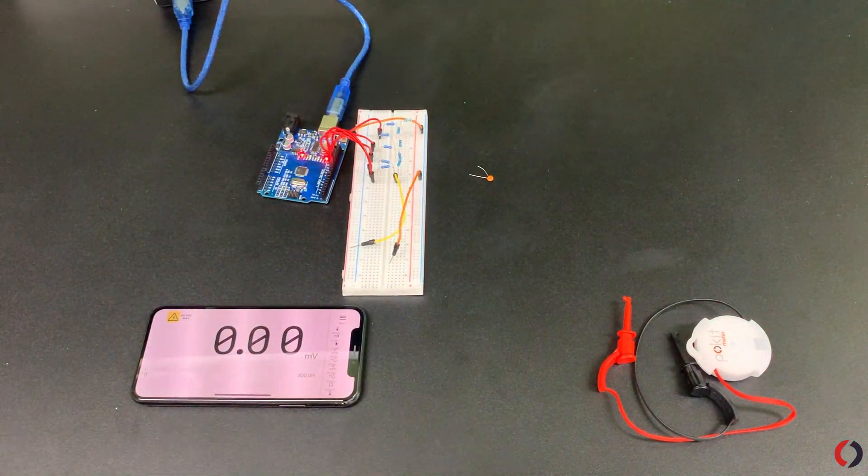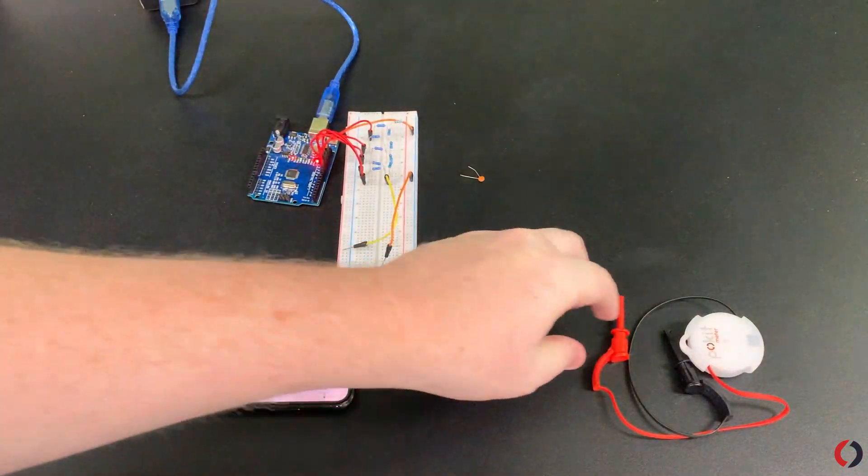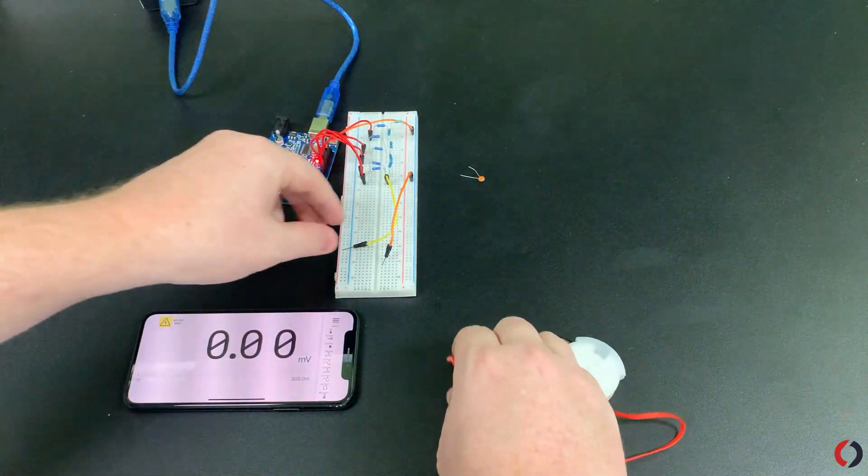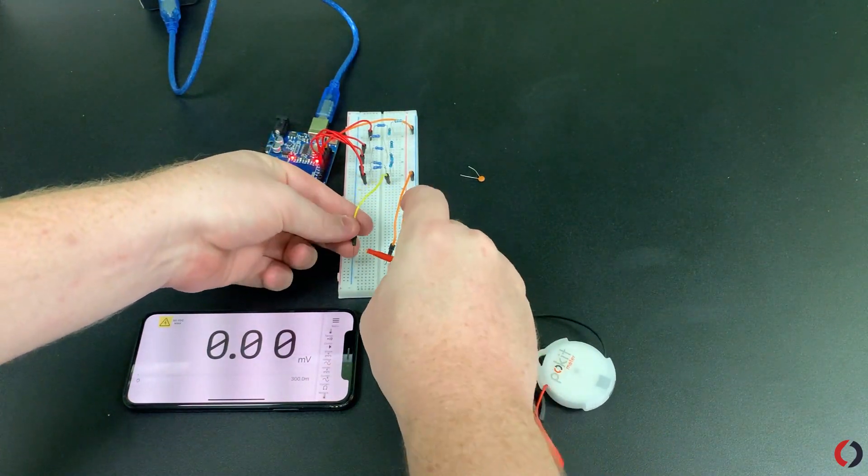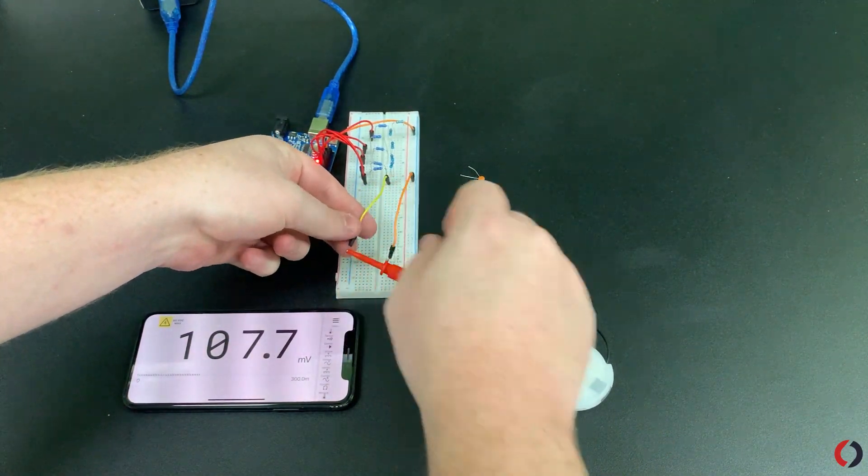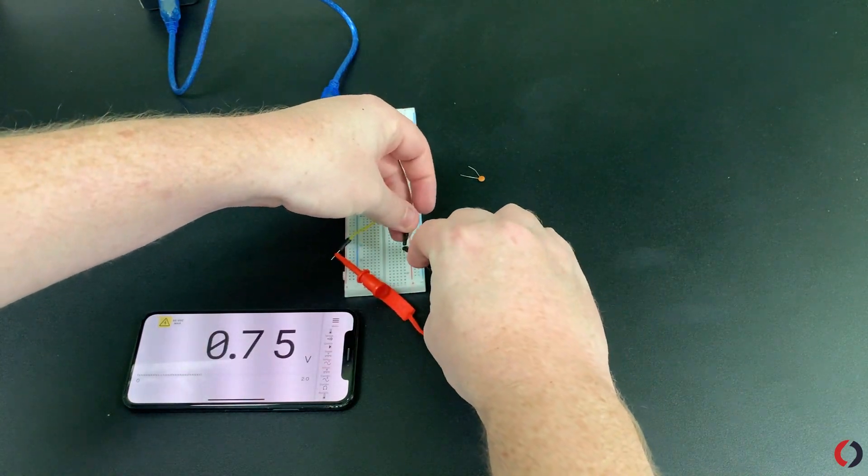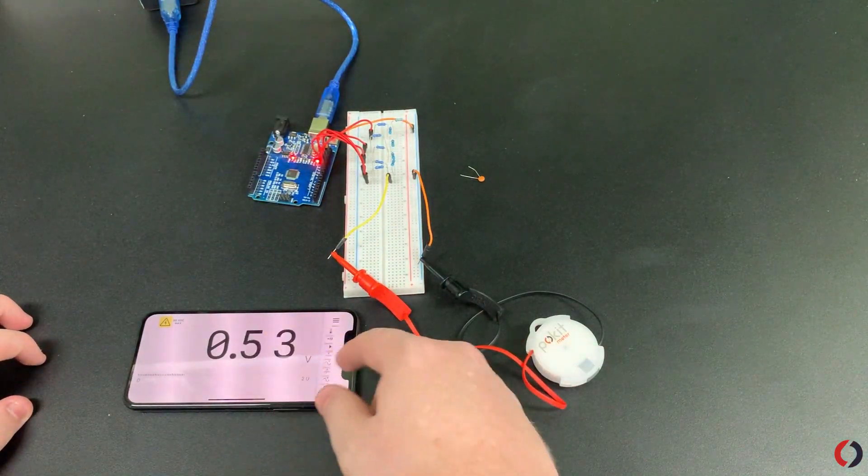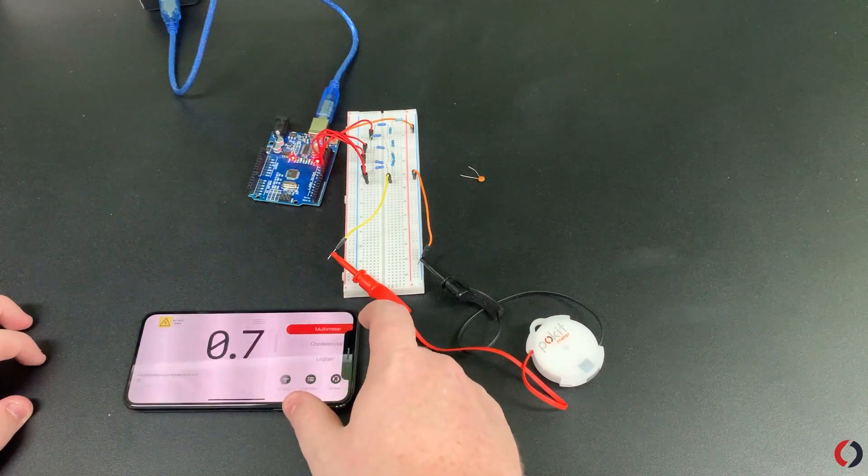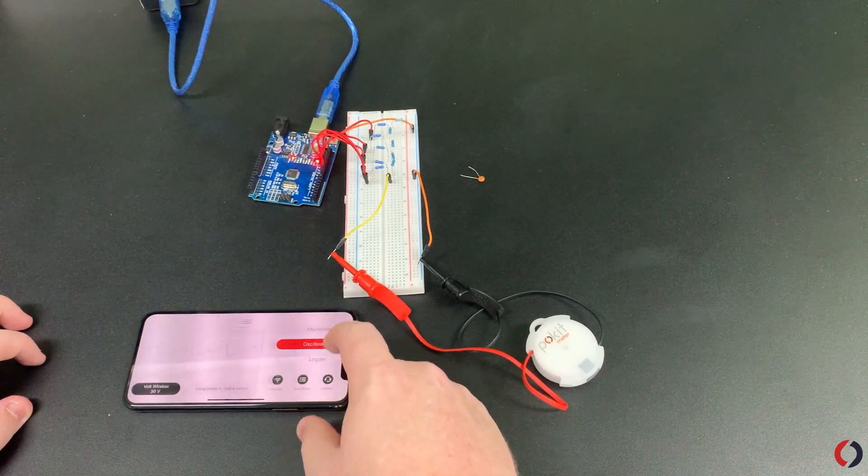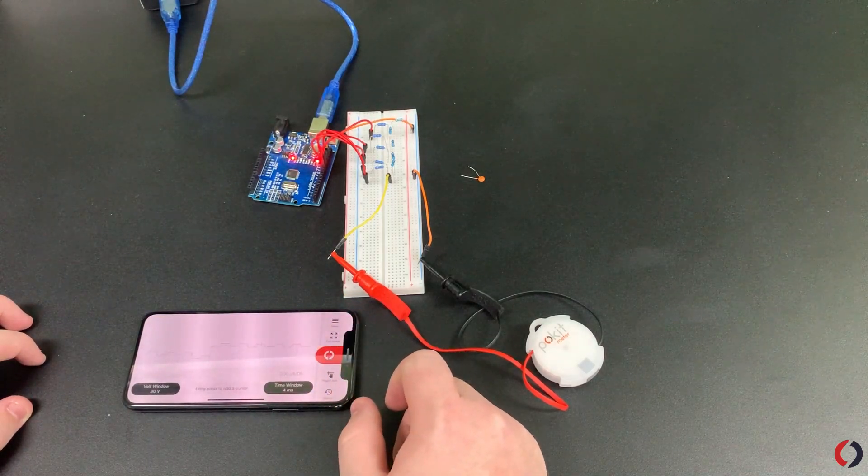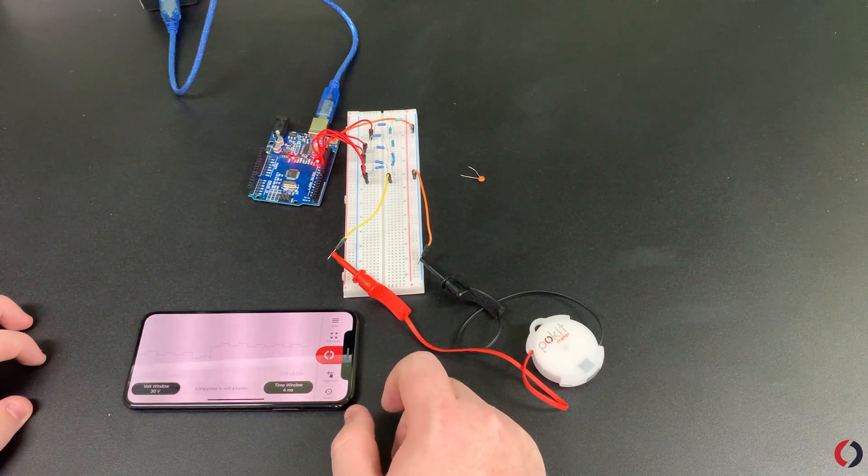Now let's test it with the Pocket Meter. So we're going to attach the positive lead to our positive connection point, negative lead to the negative connection point. You can see voltage goes up and down because it's an AC signal and we're in DC mode. So if we go to oscilloscope and reacquire, oh looks like we wired it wrong.